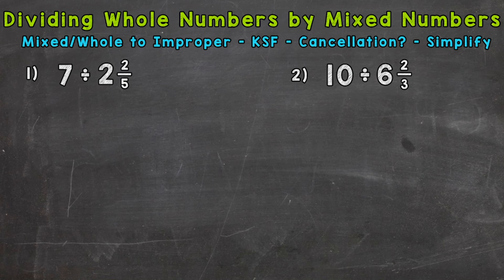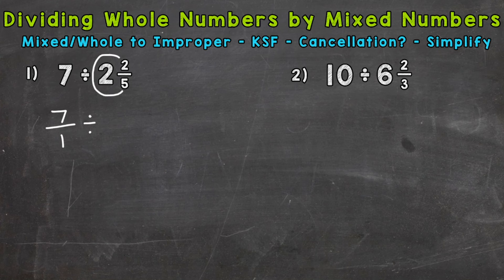Let's jump into number one, where we have 7 divided by 2 and 2 fifths. The first thing we want to do is change any mixed numbers or whole numbers to improper fractions. Let's start with the 7 — we have a whole number, so all we need to do is put it over 1, and we now have that 7 in fractional form. That works for any whole number, by the way. For the mixed number, we need to start at the bottom and work our way to the top in order to convert it to an improper fraction. We multiply and then add.